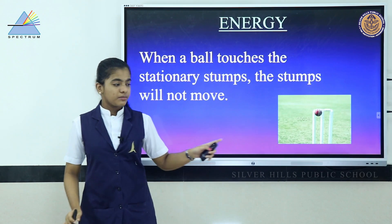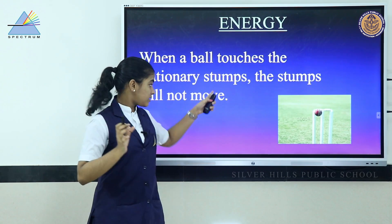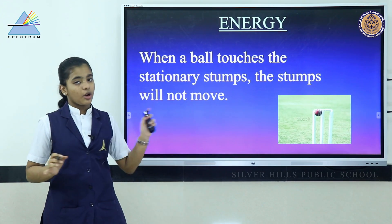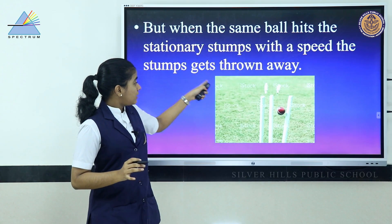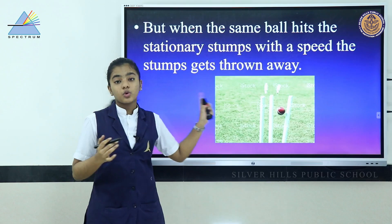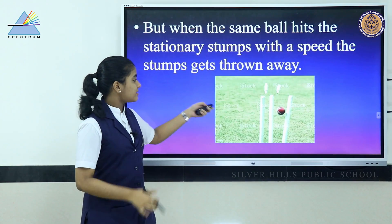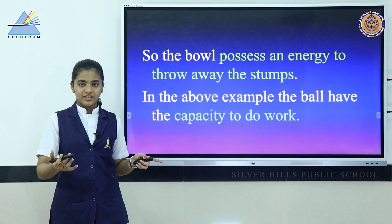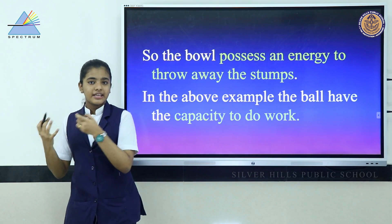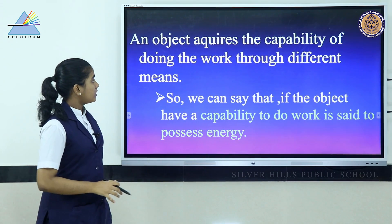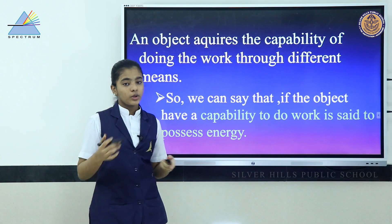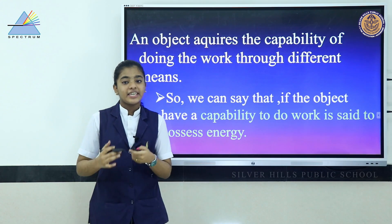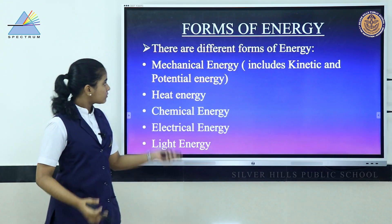When a ball is thrown at stationary stumps with slow speed, the stumps will not move. But when the same ball is hit with a faster speed, the stationary stumps get thrown away. In this example, the ball possesses energy to do work. An object that has the capability to do work is said to possess energy.